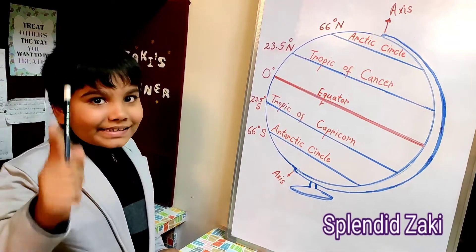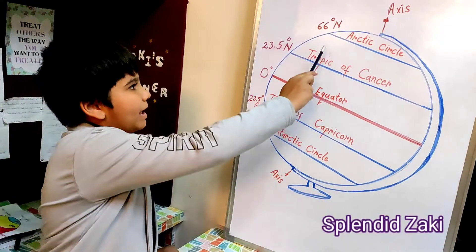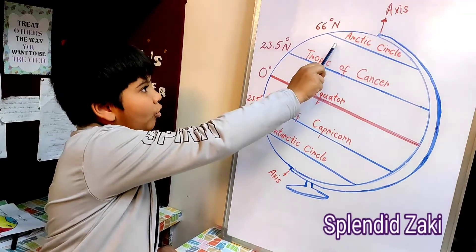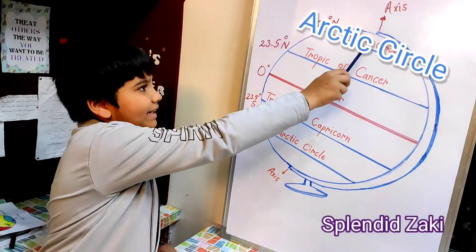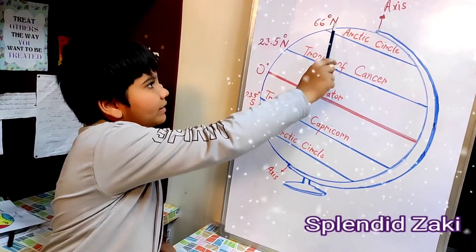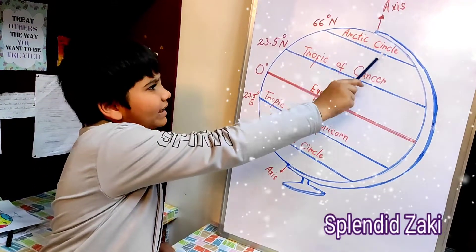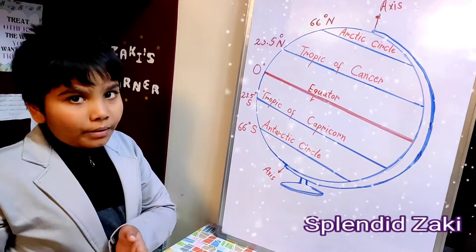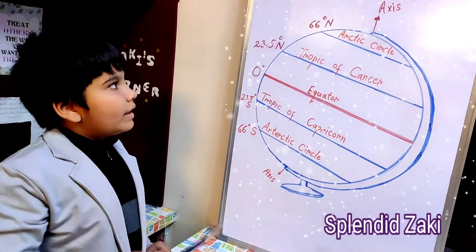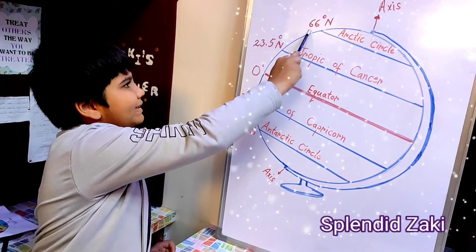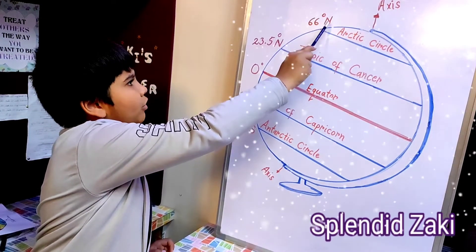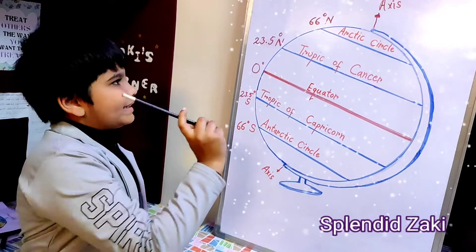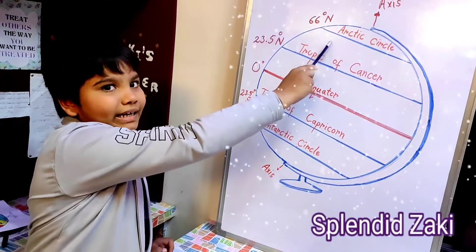Let's start with an imaginary line known as the Arctic Circle. This is the Arctic Circle. It surrounds the North Pole. It marks 66 degrees north on the globe. It is an imaginary line.